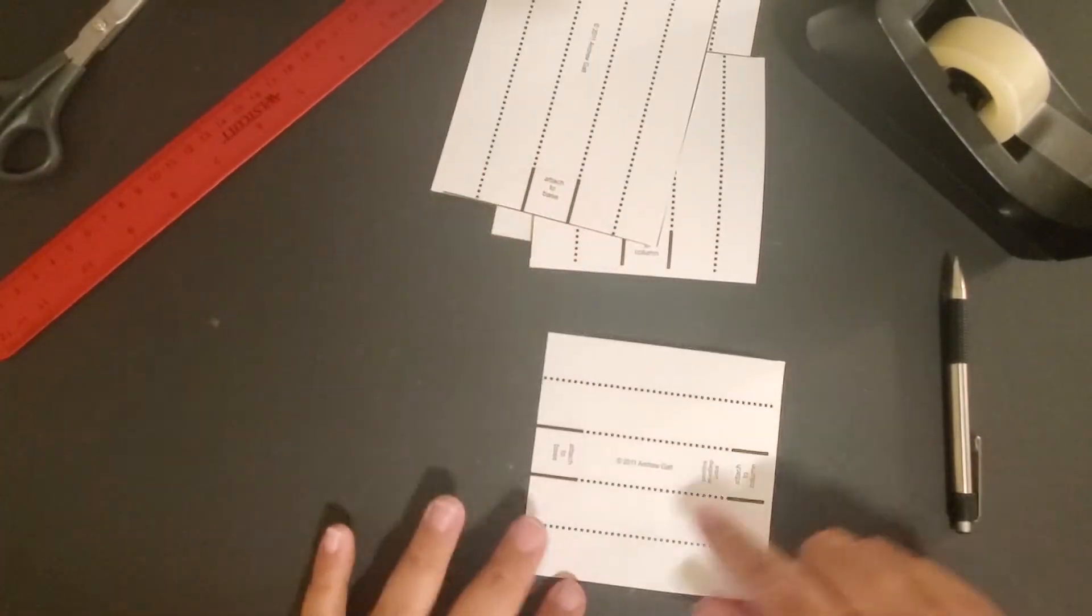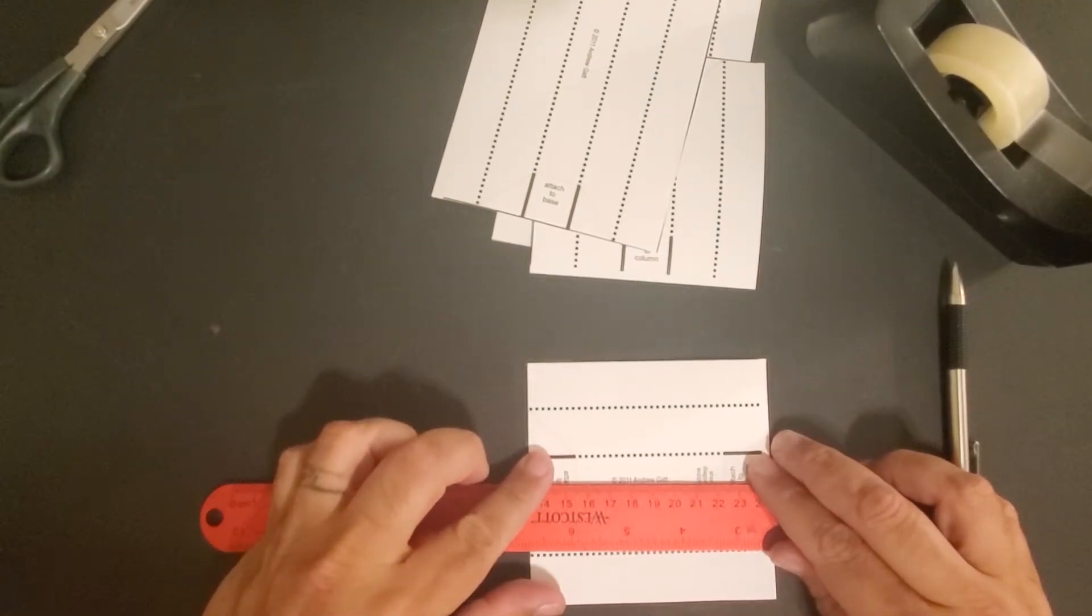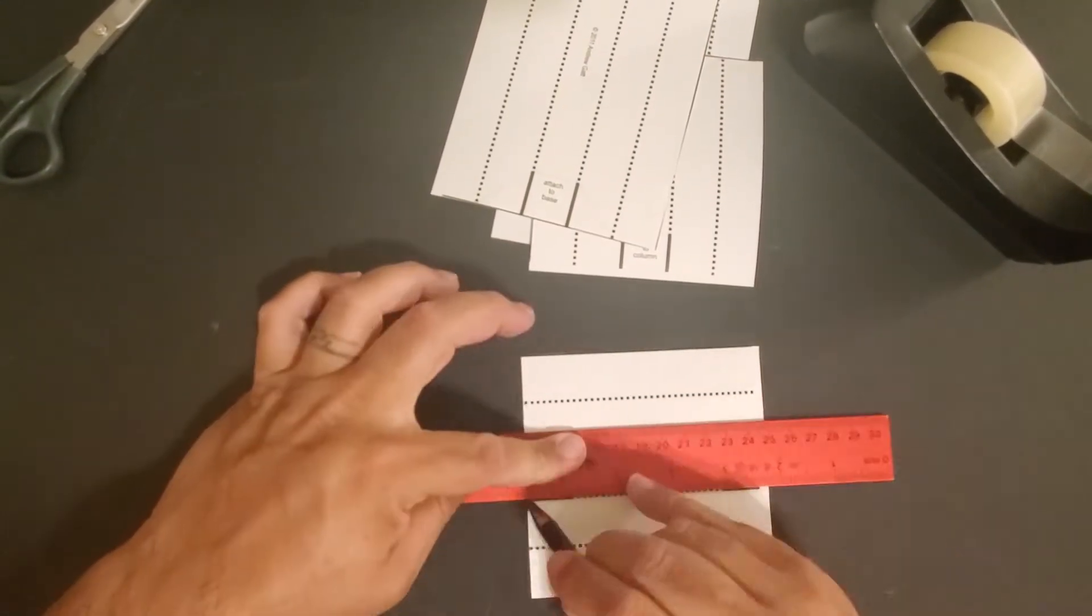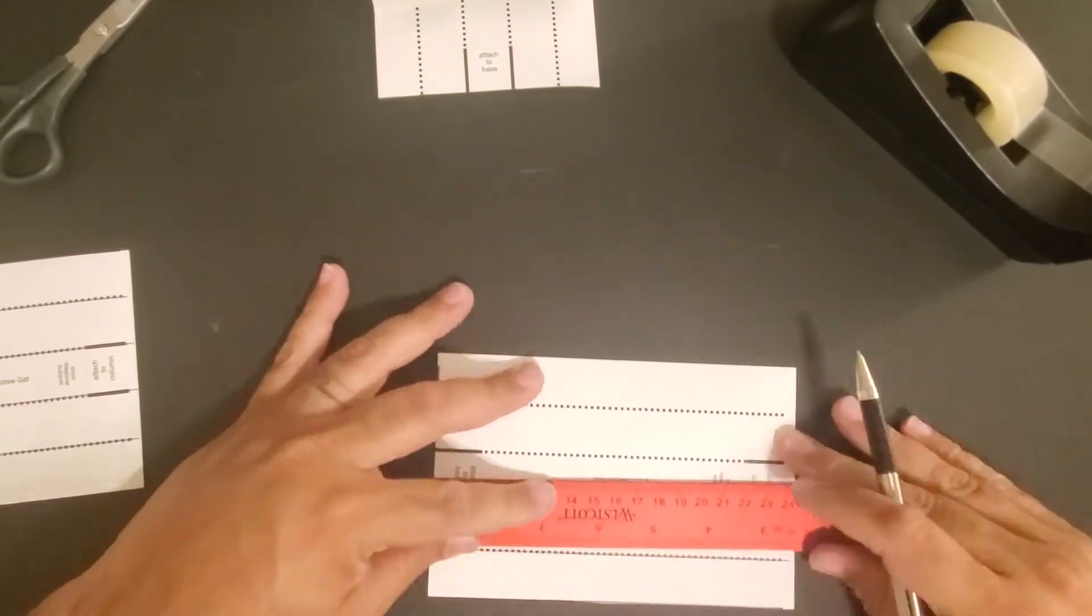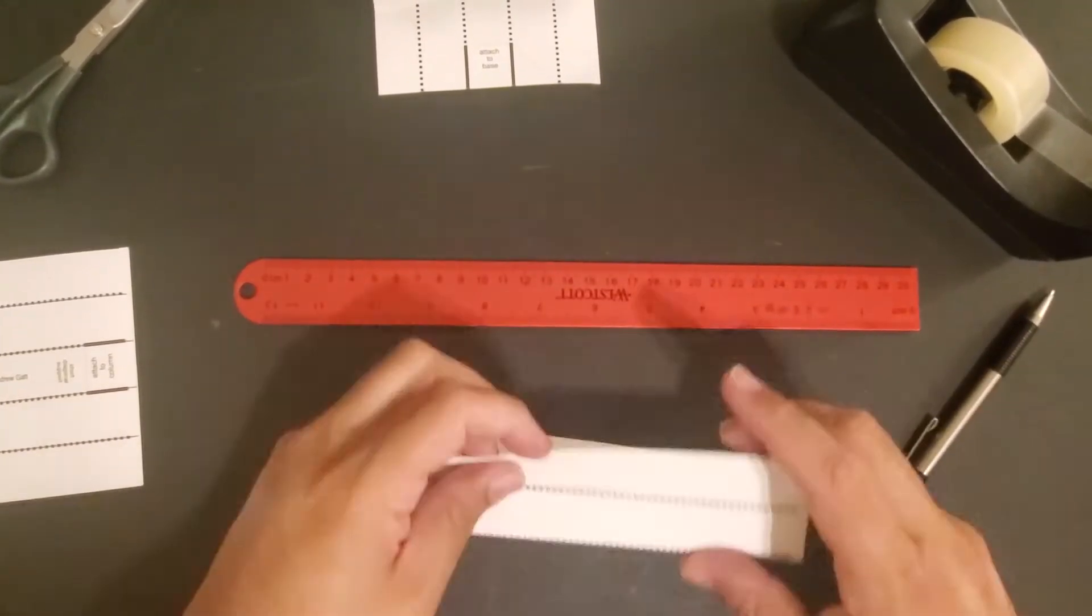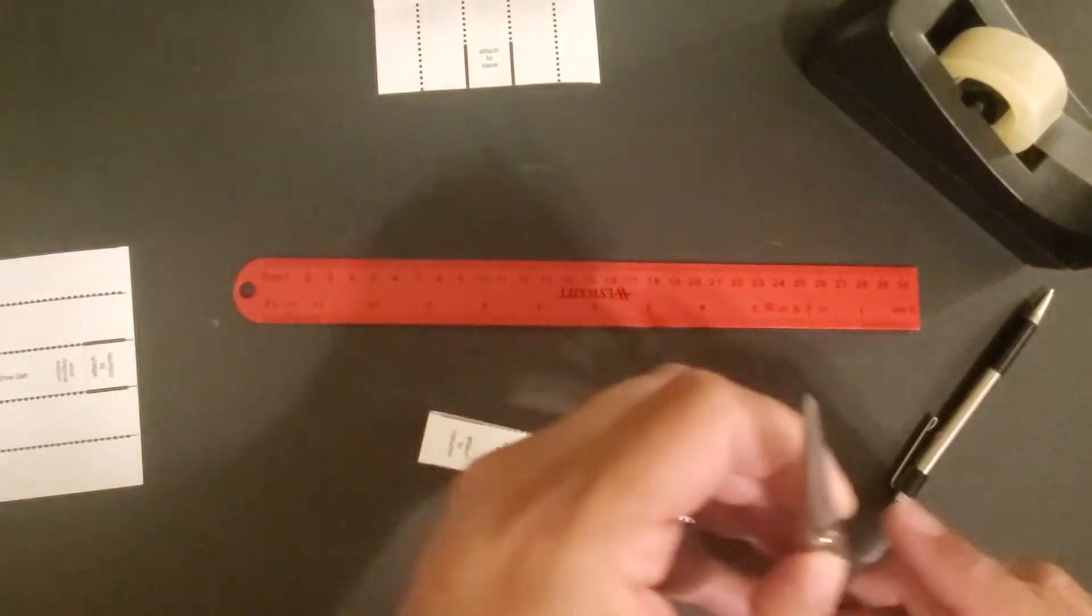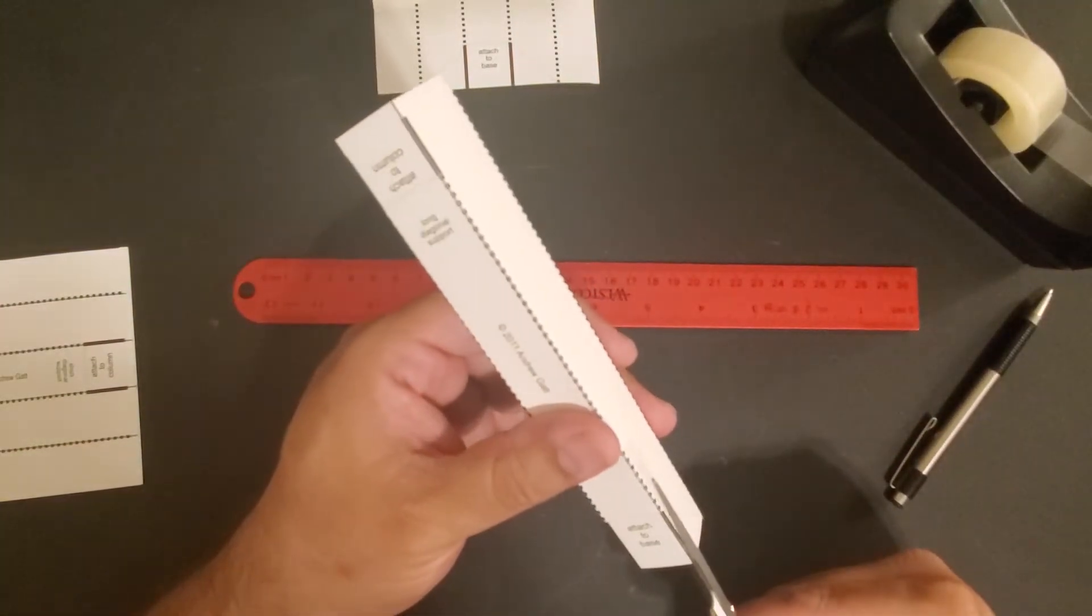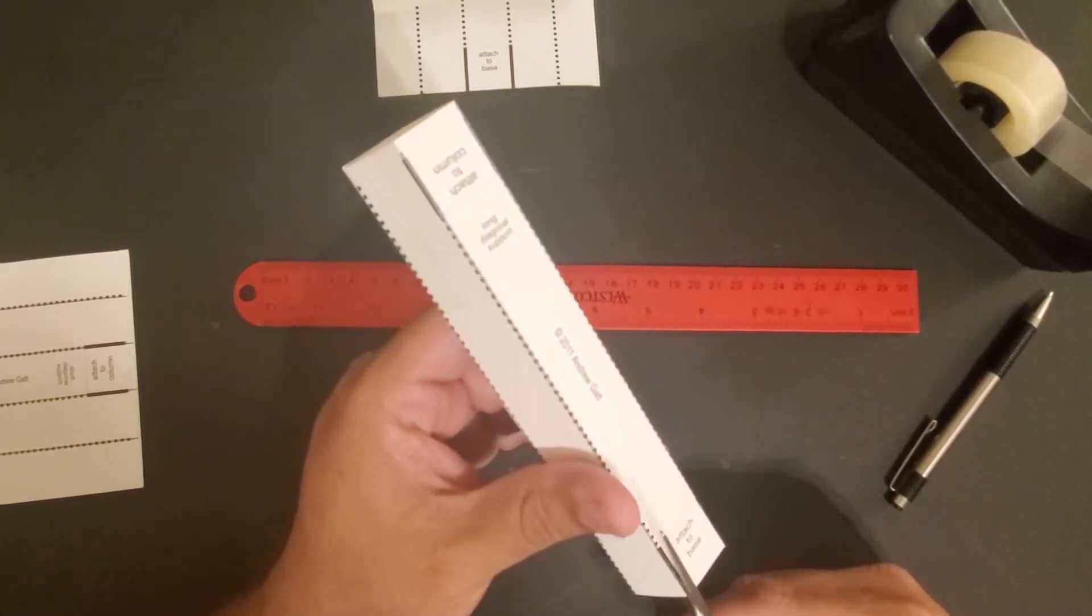And then same as before, we're going to go ahead and score on these dotted lines. Now here you'll notice those solid lines, we're going to cut on those solid lines.